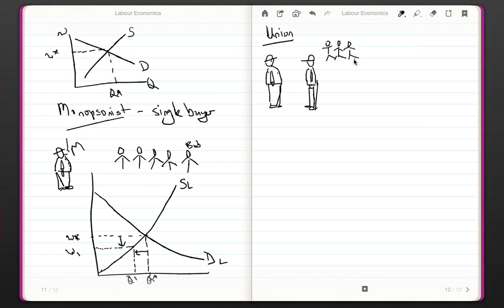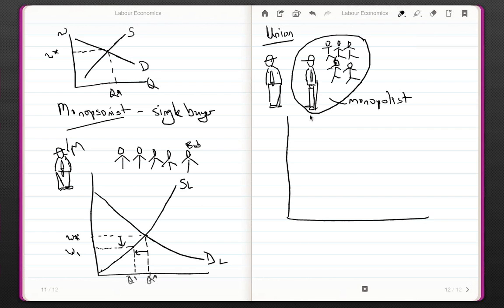As our union leader we want you to increase our wages. Now the monopsonist is facing a monopolist here because Bob has now secured all the workers behind him as a single entity. He's secured them as a single entity, so he's now acting as a monopolist versus a monopsonist. He's the buyer, he's the seller, which means the two can now negotiate over wages.